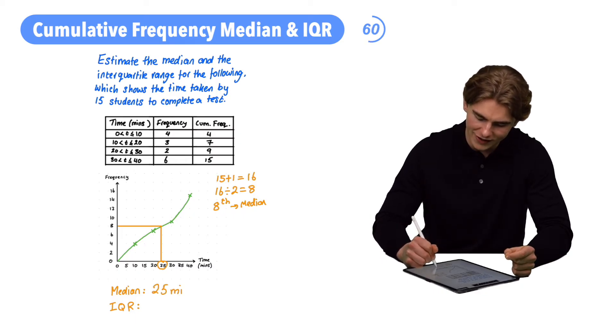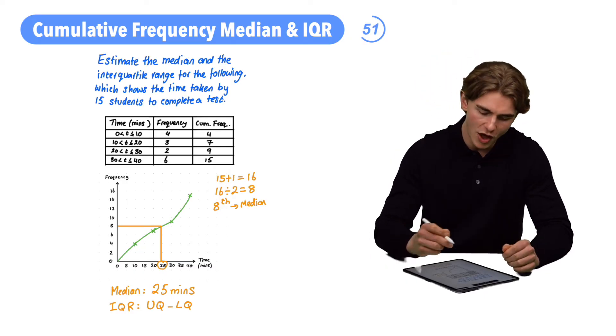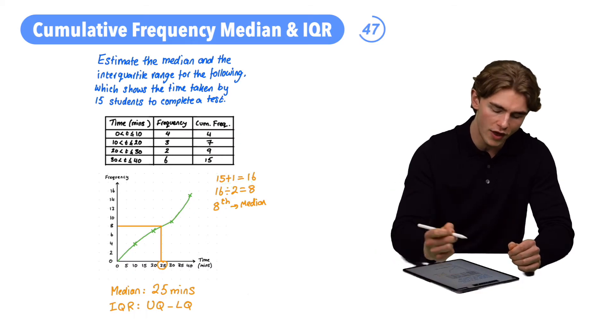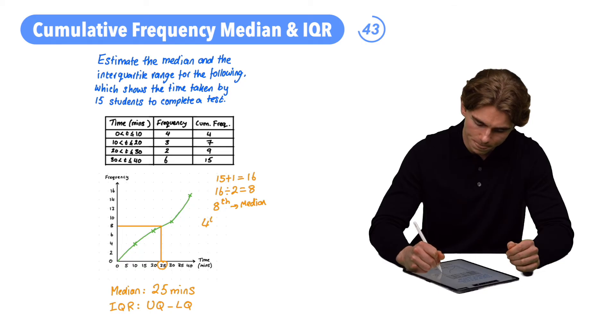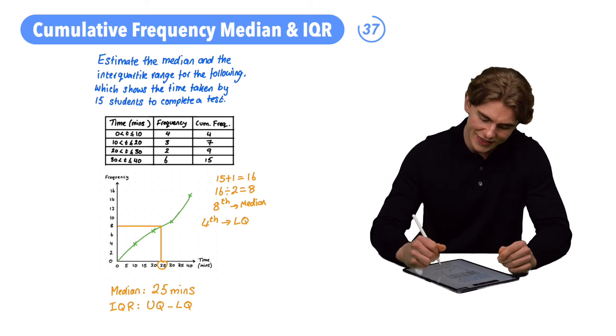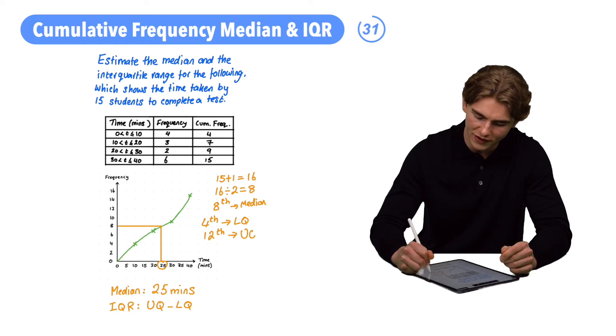Now, what about our interquartile range? That's going to be our upper quartile subtract our lower quartile. How are we going to find which values represent the upper and lower quartiles? Well, we're going to do our 16 which we found by doing our 15 plus 1 times by 1 over 4 or divided by 4. That's going to give us our 4th value as our lower quartile and we're going to times it by 3 over 4 or find 3 quarters of that 16. That's going to give us 12th value as our upper quartile.